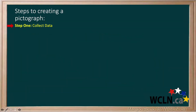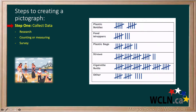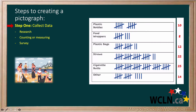Step 1: Collect Data. You can collect data by researching, by counting or measuring something, or by collecting answers to a survey question. Holly and her family took part in the Great Canadian Shoreline Cleanup. Holly collected data by using a tally to keep track of what she collected, then added up her tallies to find the totals for each category.